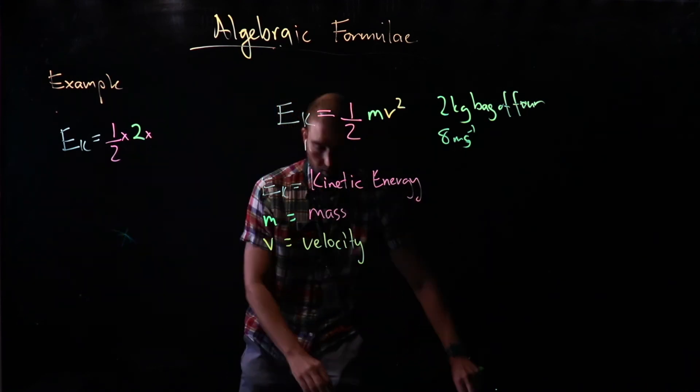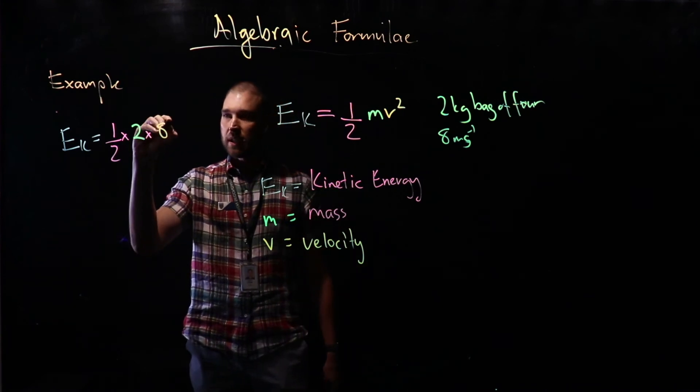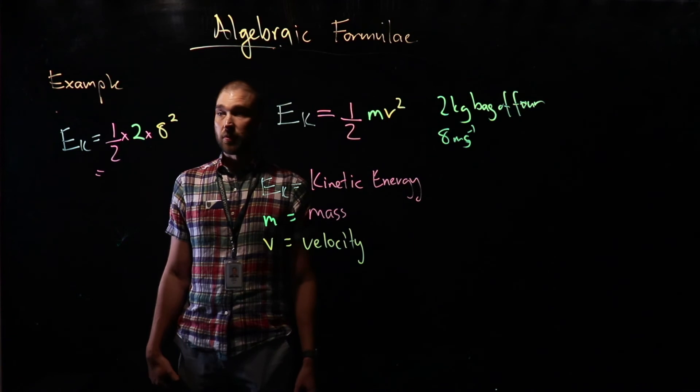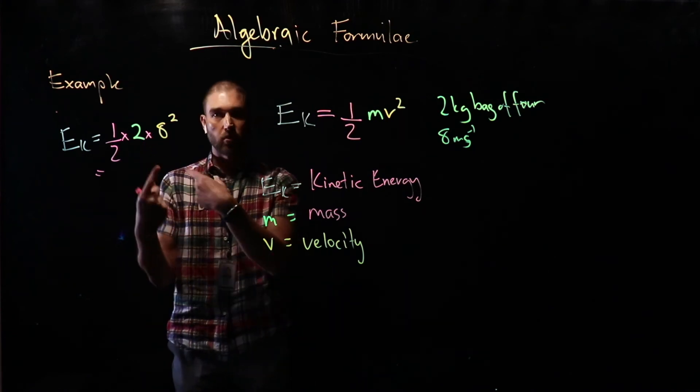8 metres per second. Velocity is in orange. So 2 times 8, and we square that. What we did just there was substitution. We're substituting in numbers for our variables.